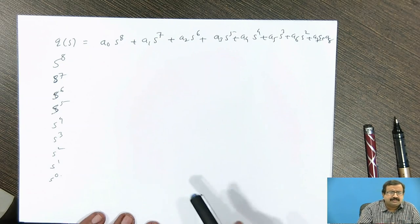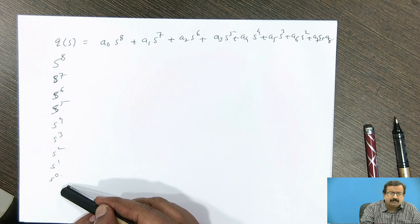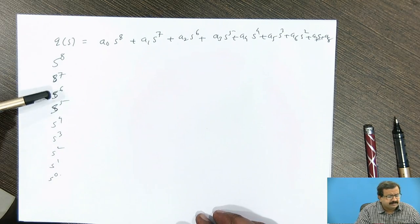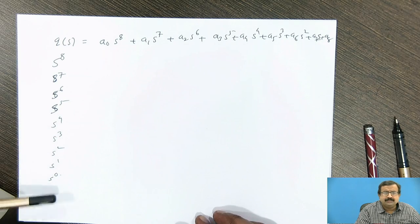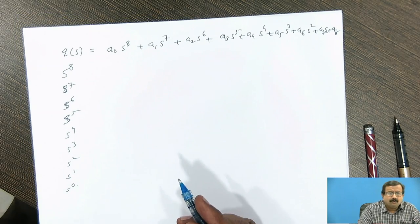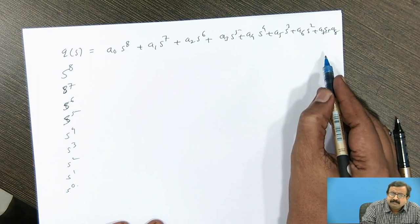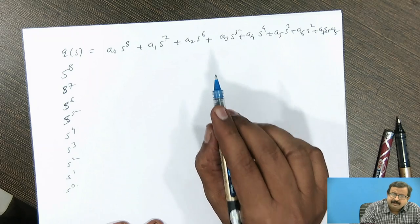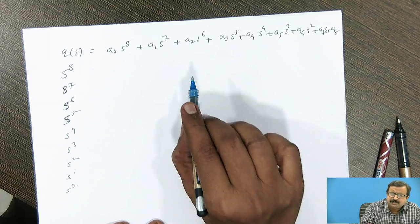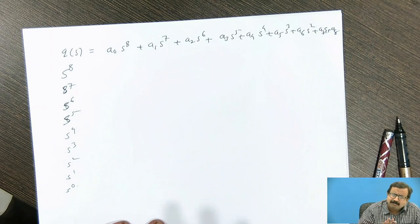Then what is the table structure? You write here the powers of s in the decreasing order. So s raise to 8, s raise to 7 and so on we move in this way: 8, 7, 6, 5, 4, 3, 2, 1 and 0. Then what we do, as this is a polynomial, it is a complete polynomial. Whether it is not complete, if the given problem is not complete, we are making it complete by making the coefficient 0. That is mandatory.